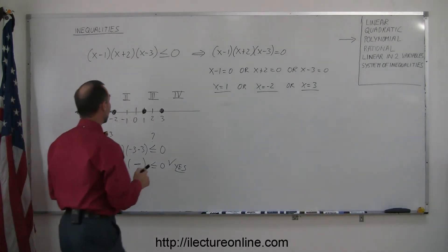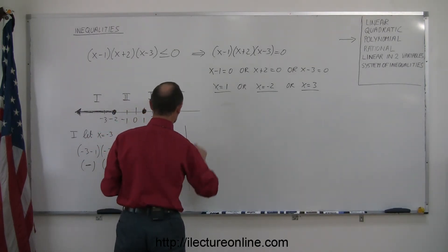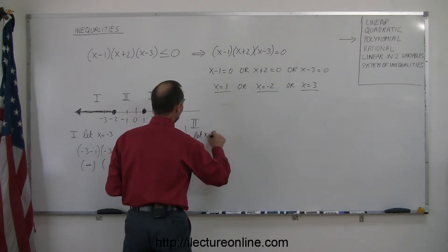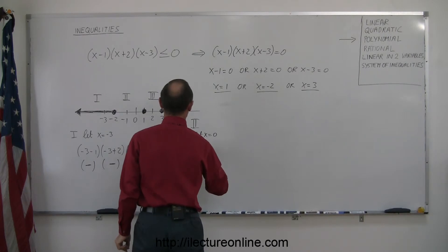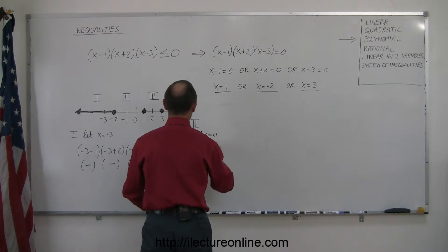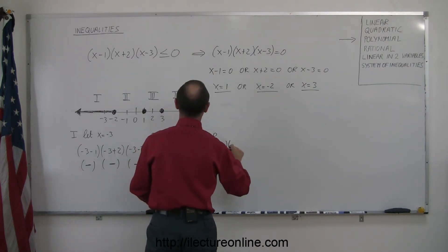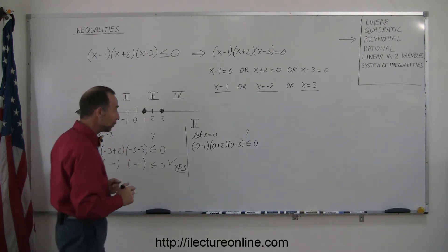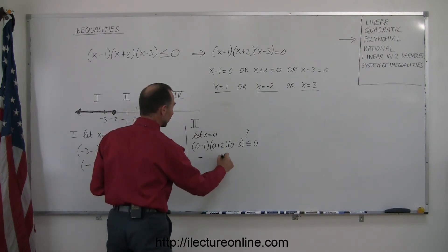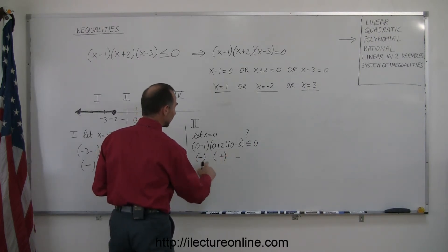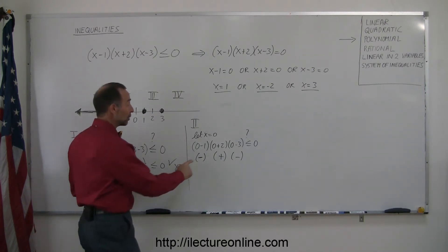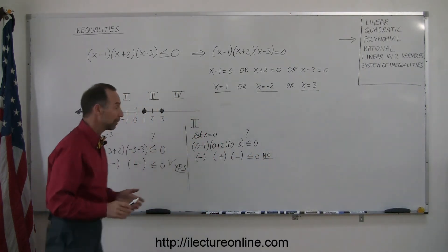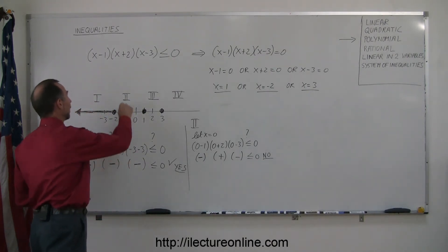Testing Region 2, we pick x equals 0 — always a good test point. Plugging in: (0 minus 1)(0 plus 2)(0 minus 3) ≤ 0. The first factor is negative, the second is positive, the third is negative. Multiplying a negative times a positive times a negative gives a positive number, because multiplying an even number of negatives gives a positive. A positive number is not less than or equal to 0, so Region 2 does not satisfy the inequality.